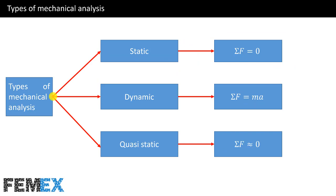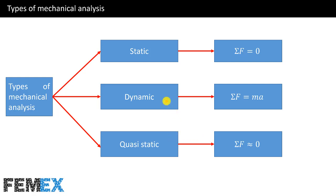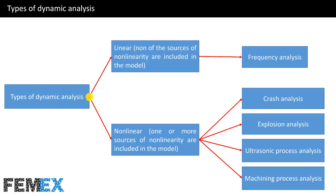Generally we have three types of mechanical analysis: static analysis, dynamic analysis, and quasi-static analysis. In static analysis, the summation of forces is equal to zero and the system is in static equilibrium. In dynamic analysis, we have Newton's second law and the system is in dynamic equilibrium. In quasi-static analysis, the summation of forces is approximately equal to zero — it is between dynamic and static analysis. We also have two types of dynamic analysis: linear and nonlinear.